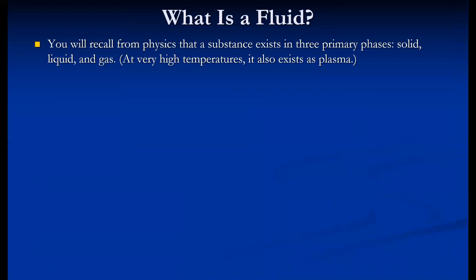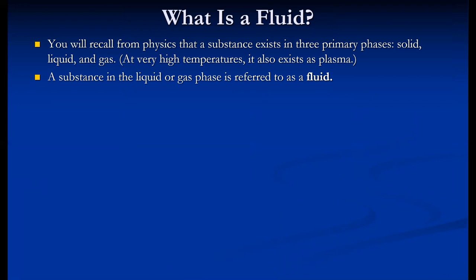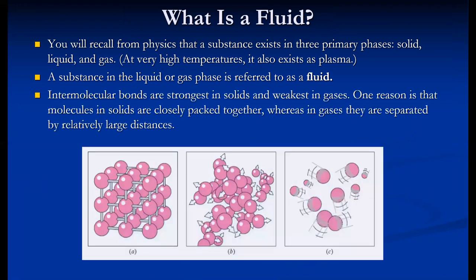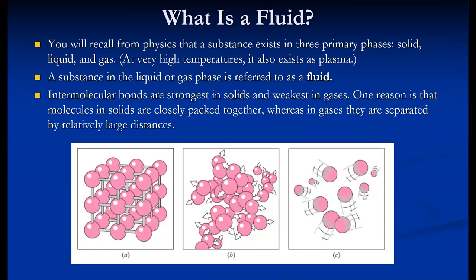Matter mainly exists in three phases: solids, liquids, and gases. At very high temperatures, it also exists as plasma. A substance in the liquid or gas phase is generally called a fluid. Intermolecular bonds are stronger in solids and weakest in gases. Molecules in solids are closely packed together, whereas in gases they are separated by relatively large distances, with liquids in between.